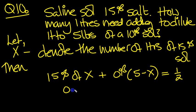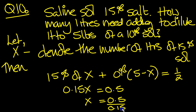So 0.15x is equal to 0.5, so x will equal 0.5 over the 0.15. And that's equal to 5 over, 50 over 15, which is the same as 10 over 3.